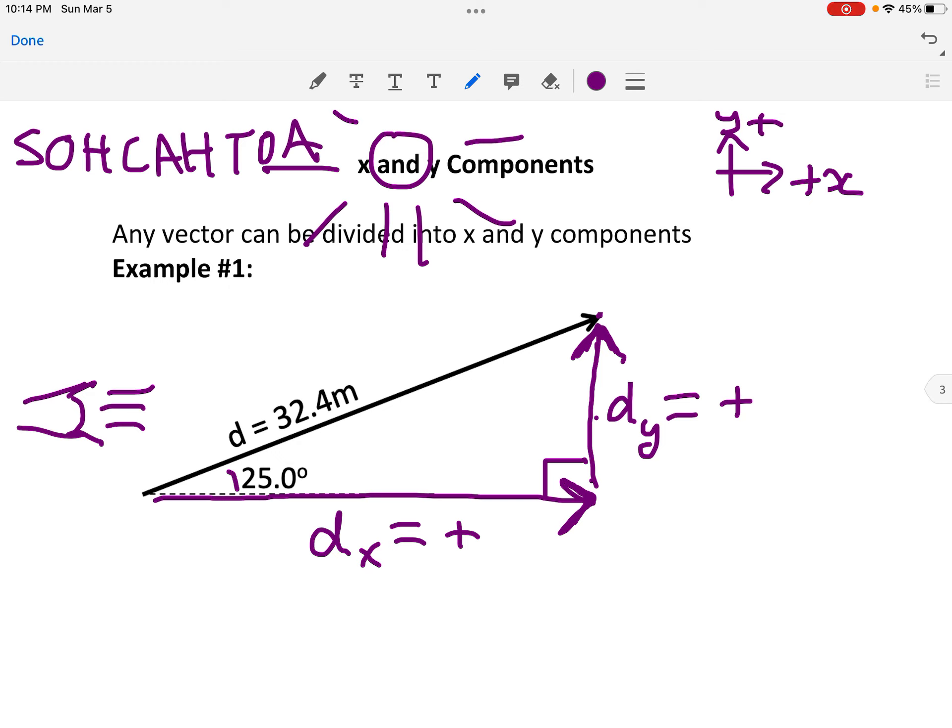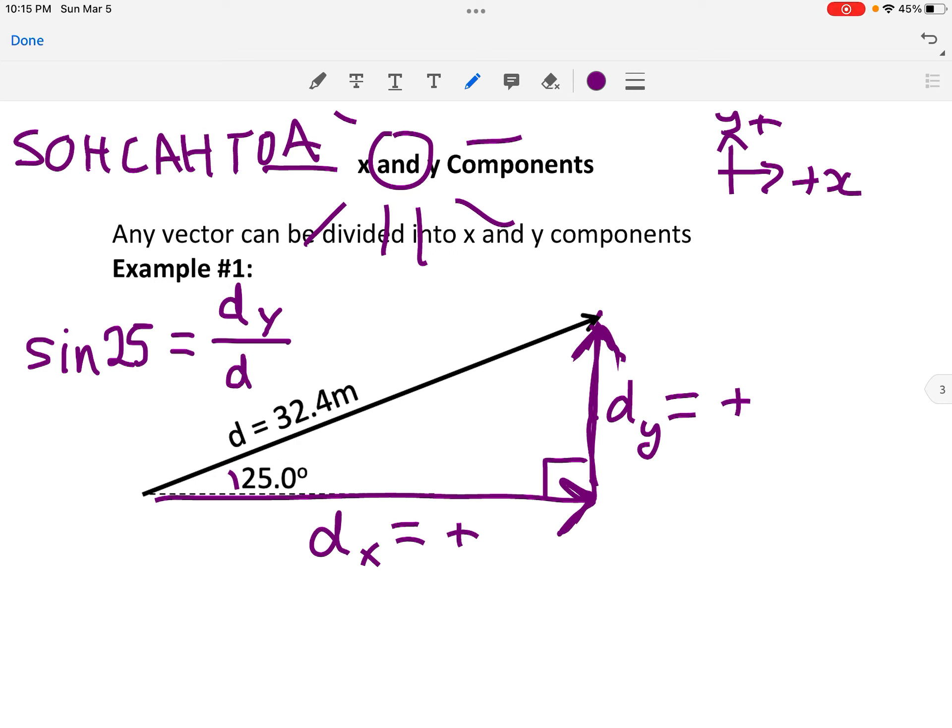So let's just go through Sokotoa and see what it tells us, and then I'll use that to find some sort of short-form tricks for you that will make your life a little bit easier. I'm just going to erase some stuff so I have a bit more space. So first, I'm going to do the sine, right? So sine is always opposite. So sine of your angle, sine of 25 degrees, is the opposite side. And opposite my 25-degree angle is this dy side, right? That's the one that's totally opposite there. So dy is the opposite, divided by the hypotenuse. And the hypotenuse is clearly the side across from the right angle, or the longest side. And that is d, my vector there of 32.4 meters.